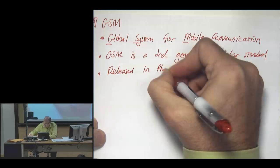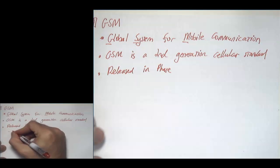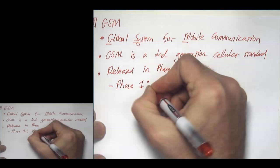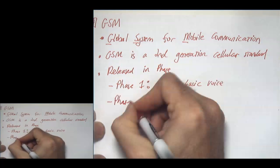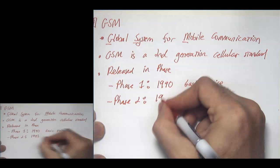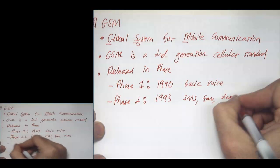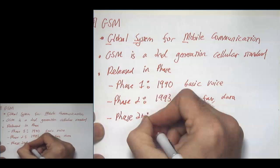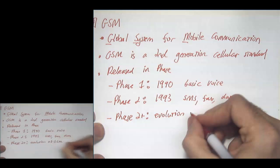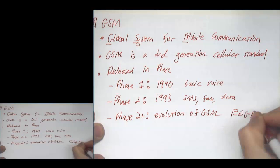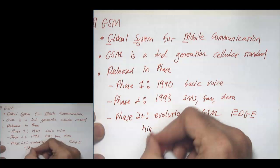Each phase had a certain set of technology, and subsequent phases added additional features. Phase one, released in 1990, had support for basic voice service. Phase two, in 1993, added SMS, fax, and more data support. Then what you might think was phase three is actually called phase two plus — the evolution of GSM — called EDGE, which added another modulation technique and higher data rates.